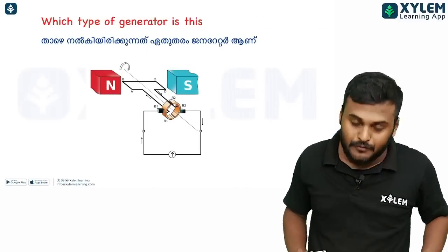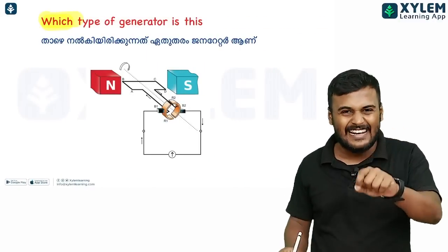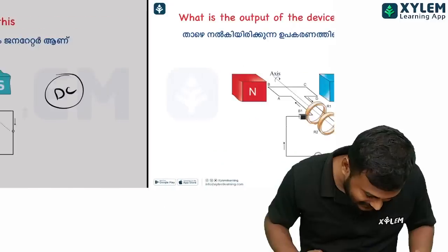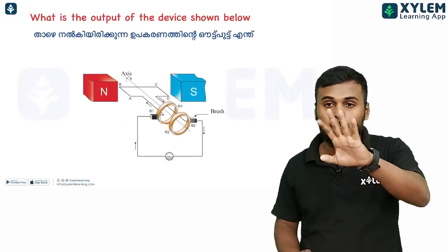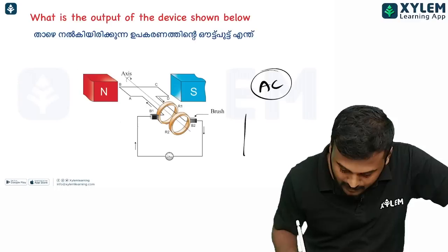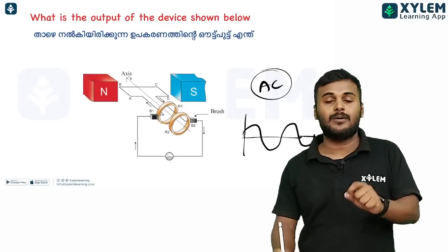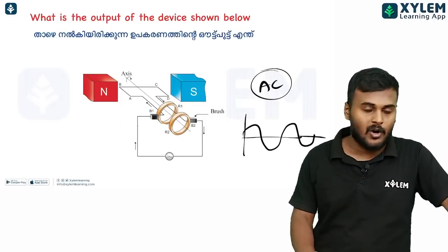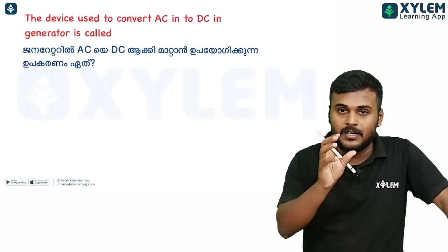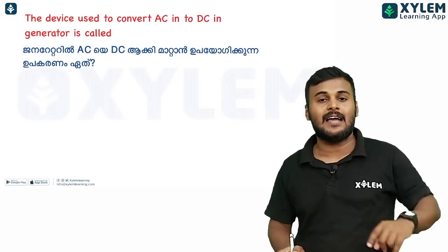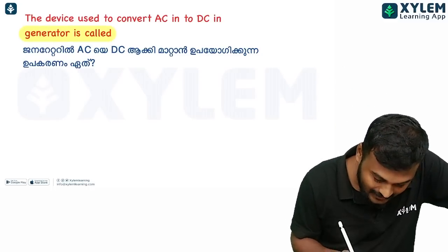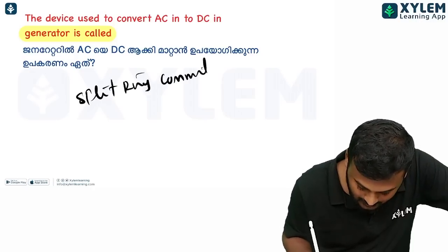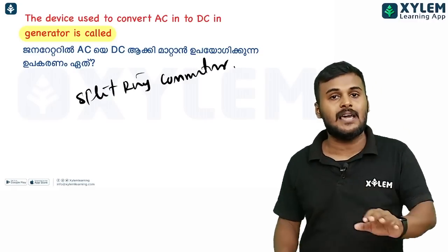Which type of generator is this? This is the DC generator. The output comes from the AC generator, so the output AC will vary in direction and magnitude. The device used to convert AC into DC uses a split-ring commutator. In a DC generator we can see the split-ring commutator.